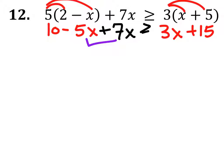Then we'll combine like terms. Negative 5x plus 7x would give us 2x. And this is 10, that's a positive 2x. And this is greater than or equal to 3x plus 15.